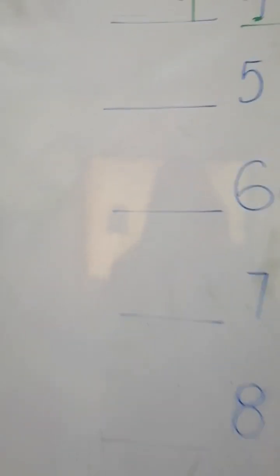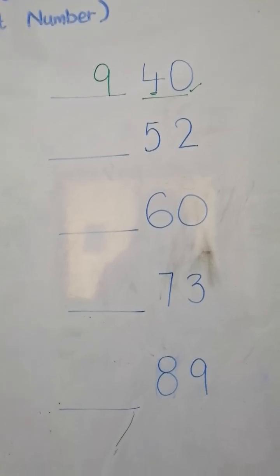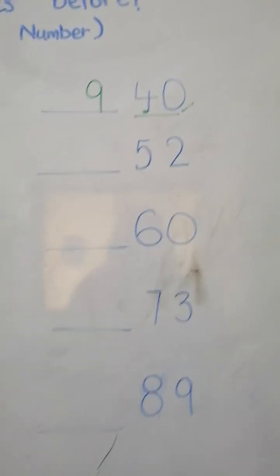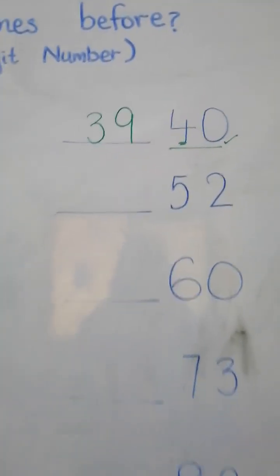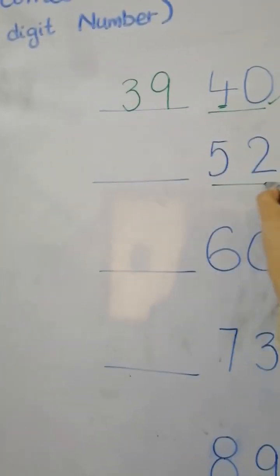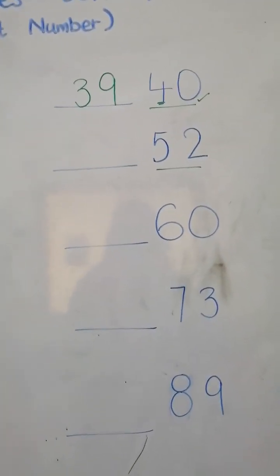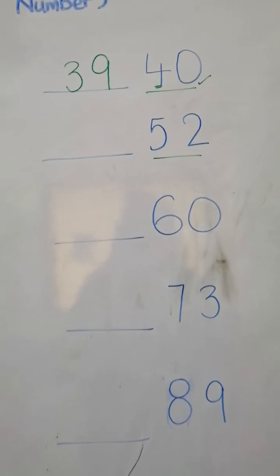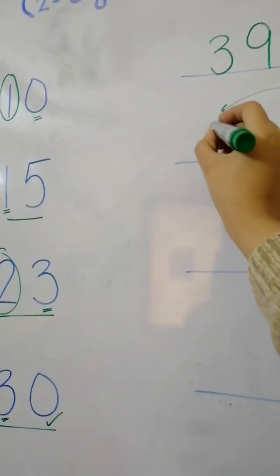For 40, we will write number nine in the place of zero, and what should we write for four? Five, four — yes, right, number three. Next we have fifty-two. Do we have zero here? No. Then we will write number five.